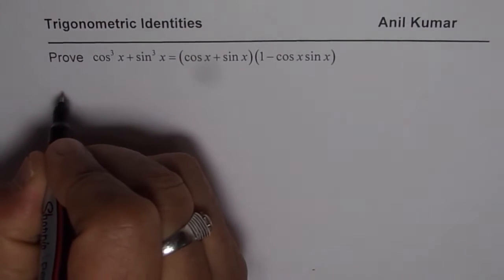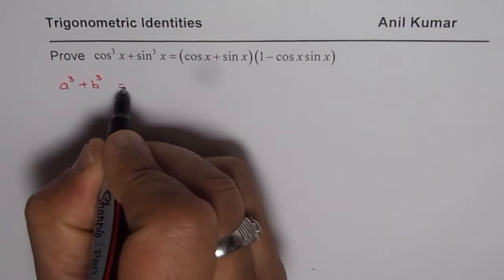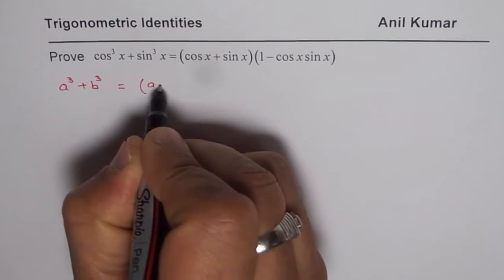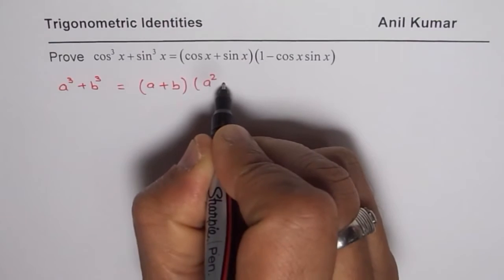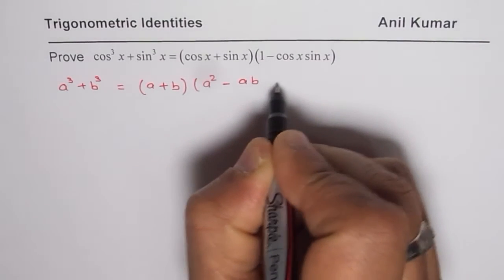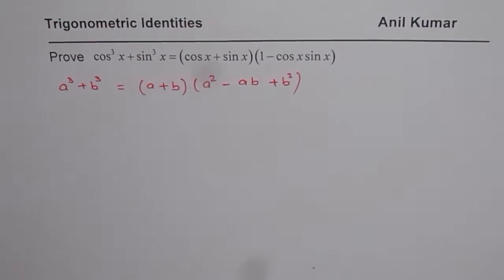Now I hope you remember the formula, a³ + b³ is what? a³ + b³ can be written as (a + b)(a² - ab + b²). So that is the formula for a³ + b³.